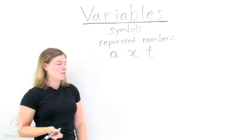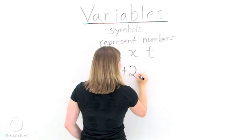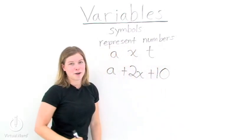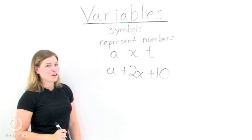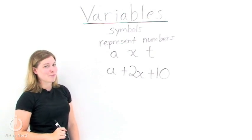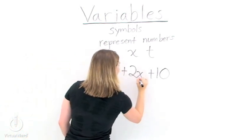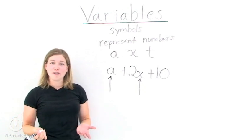So let's take an example. If we look at the expression a plus 2x plus 10, let's pick out the variables. Well, we're looking for symbols that represent numbers. I don't see any dogs or sailboats, so we should probably just pick out the letters. There's an a here, and an x. In this expression, a and x are our two variables.